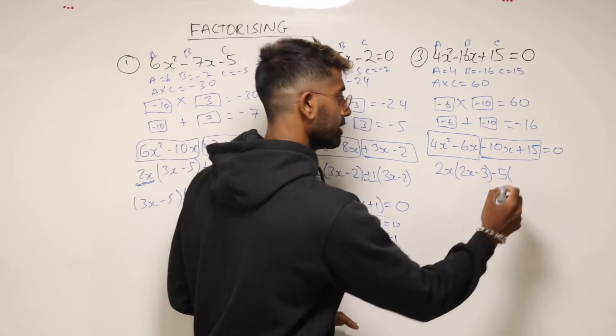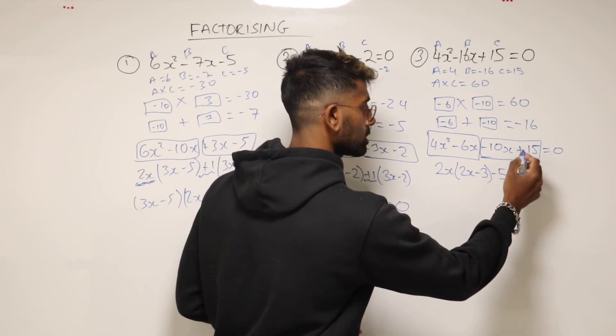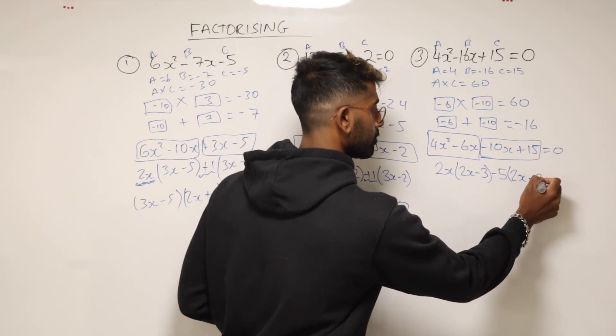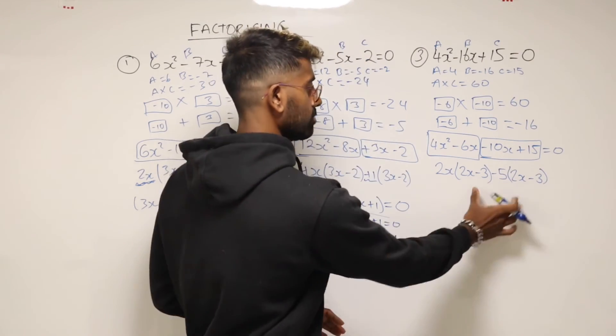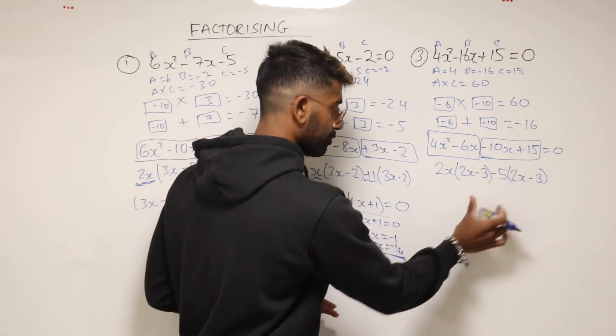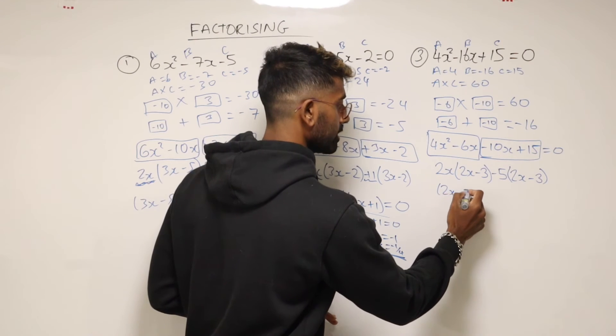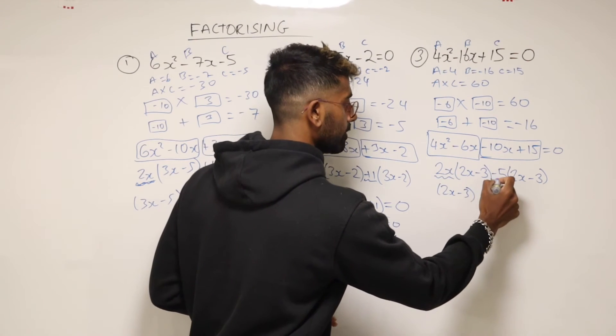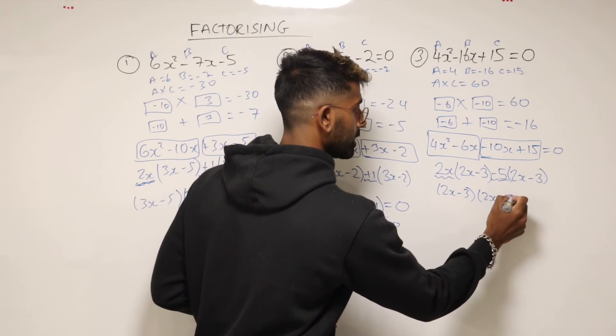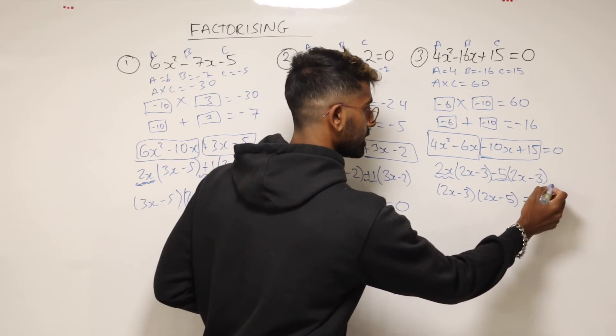So if I had minus 5 out of there, this would leave me with 2x and then minus 3. There we go. So my brackets match up. This is great. Pull these two brackets out. You have 2x minus 3. And then what's left over? 2x minus 5. And there you go. That's equal to zero.